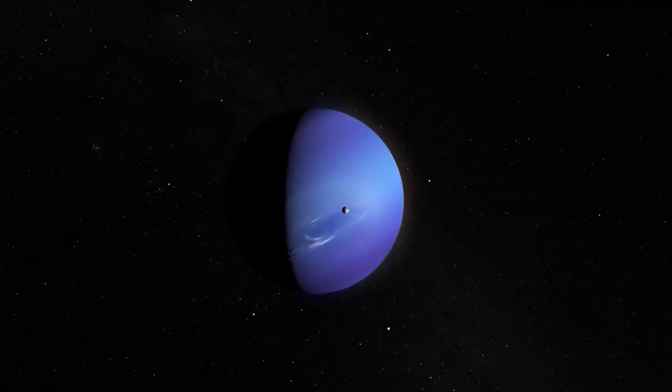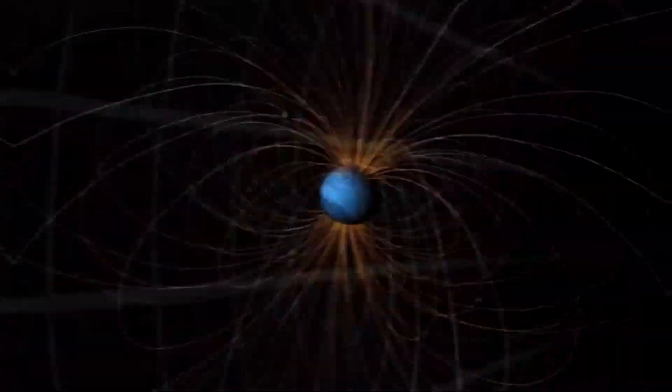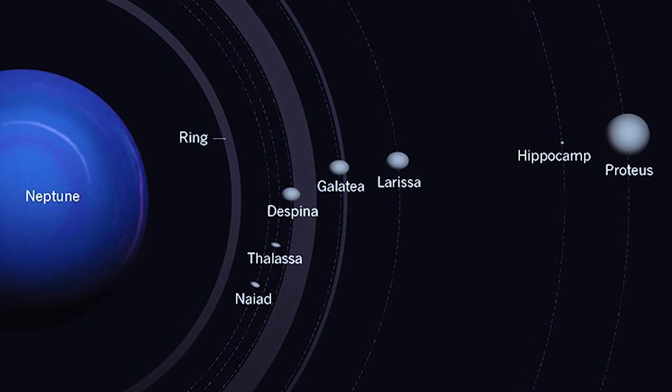When Neptune was discovered in 1846, astronomers noticed its gravitational influence on Uranus. In 1989, the Voyager 2 spacecraft flew past Neptune, providing a direct view of its stunning blue appearance, rings and moons.